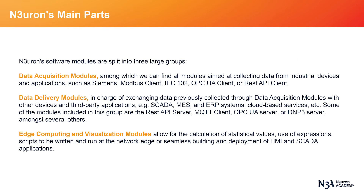Neuron's software modules are split into three large groups. Data acquisition modules include all modules aimed at collecting data from industrial devices and applications, such as Siemens, Modbus Client, IEC 102, OPC UA Client, or REST API Client. Data delivery modules are in charge of exchanging data previously collected through data acquisition modules with other devices and third-party applications — that is SCADA, MES, ERP systems, cloud-based services, etc. Some of the modules included in this group are the REST API server, MQTT client, OPC UA server, or DNP3 server, amongst several others.